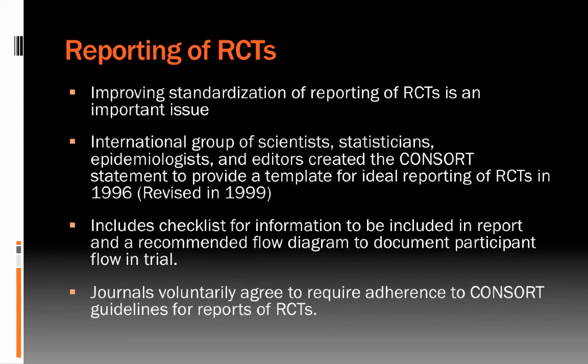In the mid-1990s, journal editors recognized inconsistency in how people reported research results and led the charge to create standards. They produced the CONSORT guidelines, designed to provide a template of what information must be included in reports of randomized trials — including how participants in the study are described, which is important for determining how well studies generalize to other populations. Research journals today voluntarily adhere to CONSORT guidelines, and since their release we have seen much more consistency in reporting of randomized trials.